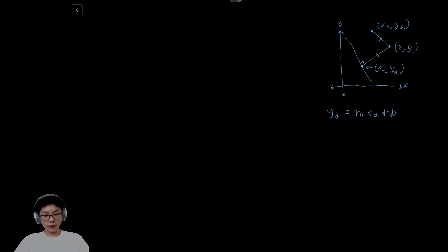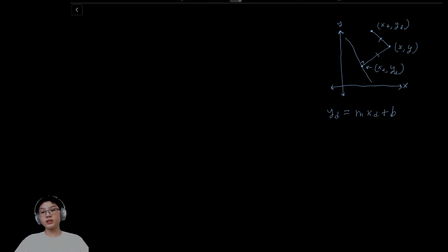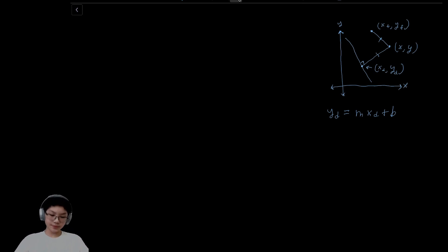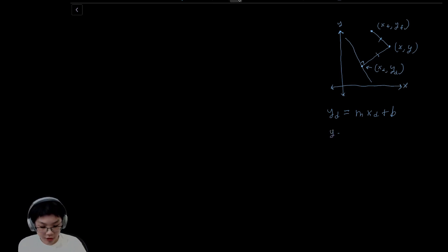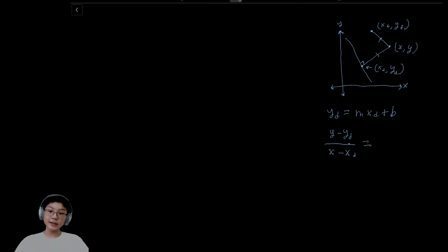We know all the variables except two. We know xf, yf, xd, and yd. So we have two variables we currently do not know, meaning we're going to need two equations to solve for x and y. Our first equation arises through the constraint that the line segment representing the distance from our point x, y to the directrix must be perpendicular to the directrix. So the slope of this line segment is going to be y minus yd over x minus xd, and because this line segment is perpendicular to the directrix, it will be the negative reciprocal of the slope of the directrix — so it's going to be negative one over m.